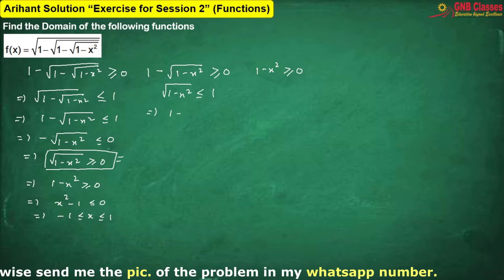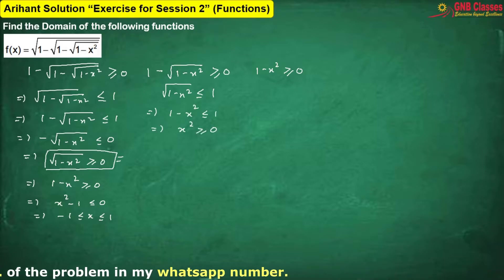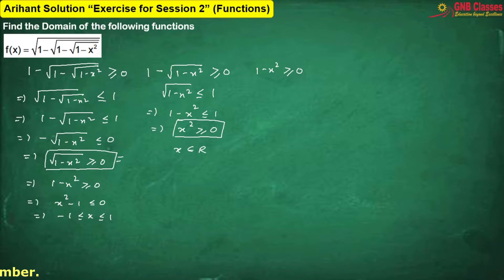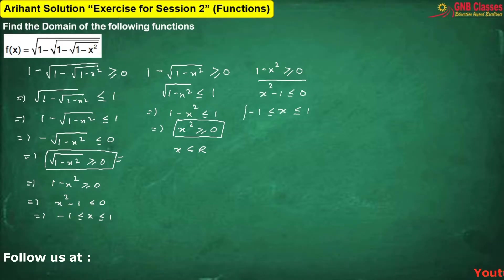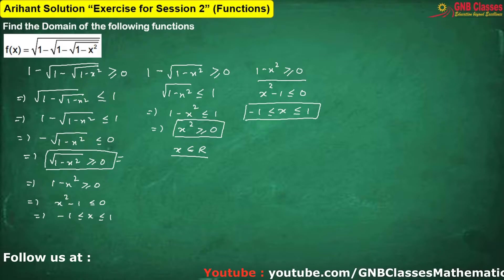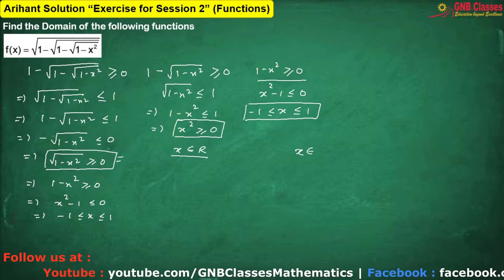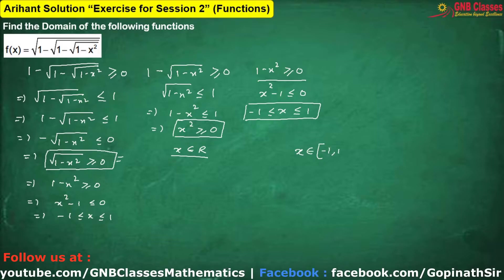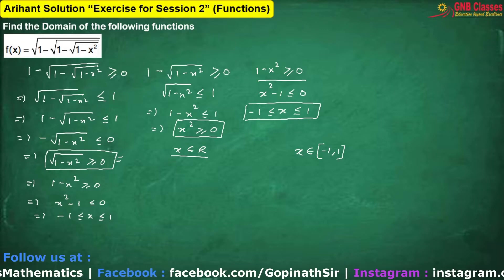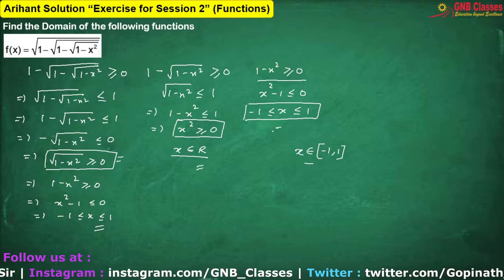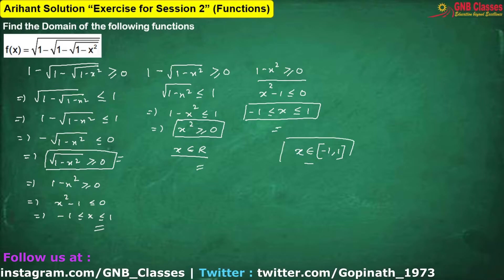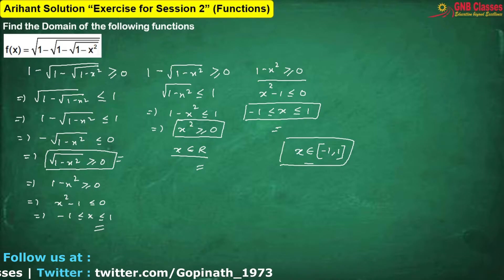Squaring both sides for the second condition, we find it is satisfied for all x belonging to real values. From the third condition, we again obtain a result. By combining all three results, we can say x always lies between minus one and one. Since x in (-1, 1) satisfies all three conditions, this is the required domain of the given function.